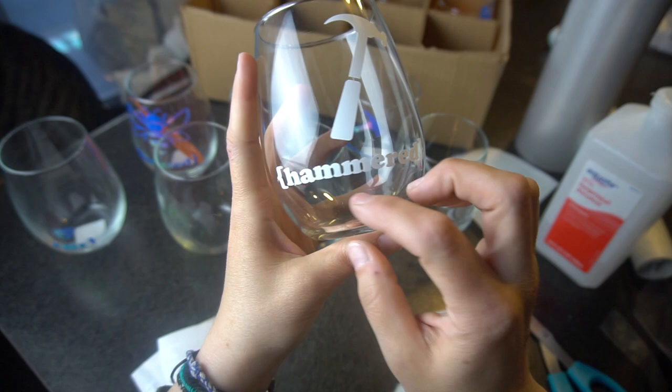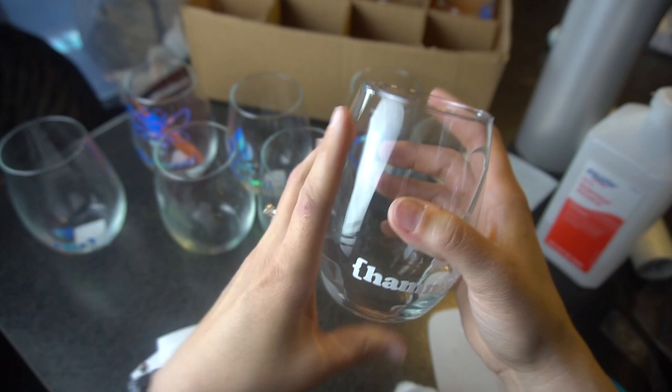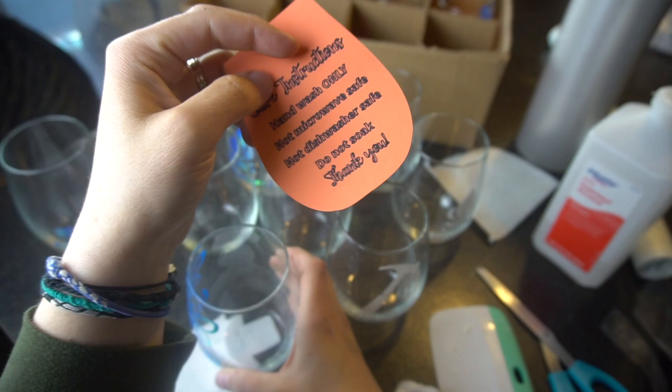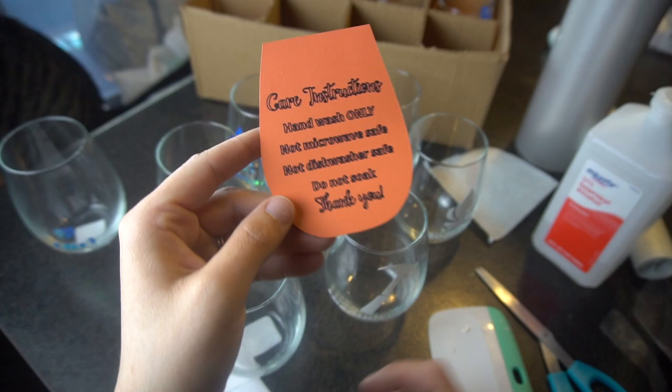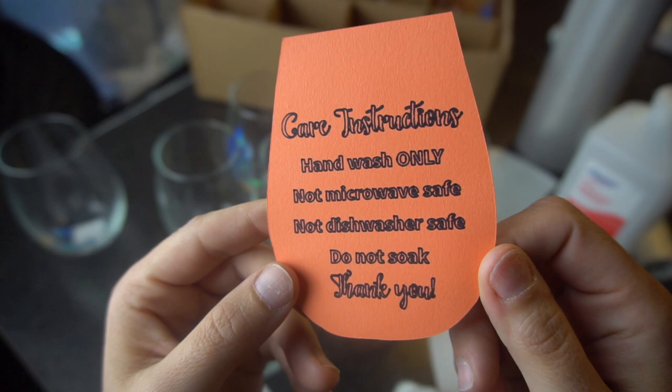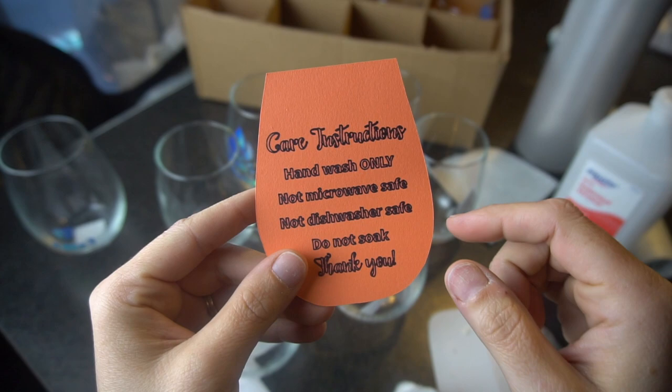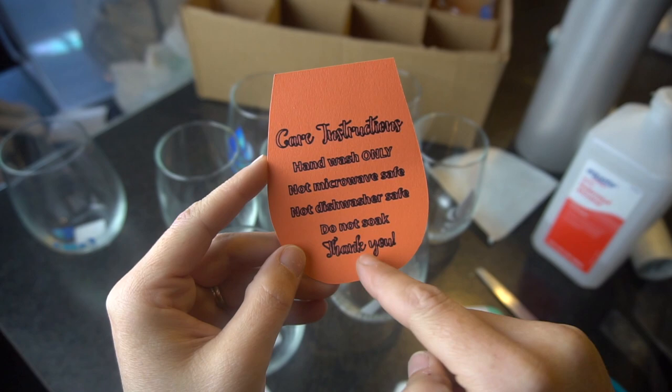Oh, and then also I made these little cheat sheets, I guess. I cut it out to look like a wine glass. It says care instructions, hand wash only, not microwave safe, not dishwasher safe, and do not soak. So these were really easy to do. I got the instructions off of either Etsy or Design Space, and then I just found a wine glass on Google and I put it into Design Space. And so it cut this out and then it printed this part out. So it was very easy to do. I think it's just something nice to do that if somebody buys it and they forget, or they give it as a gift, hey, I'm not supposed to wash this or throw it in the dishwasher, that was just an extra nice step.